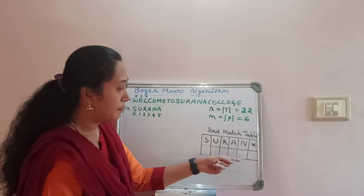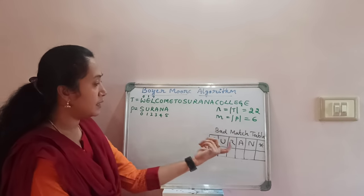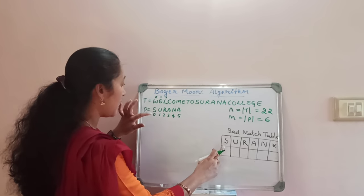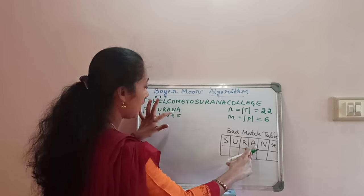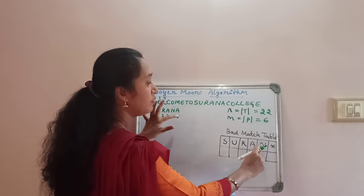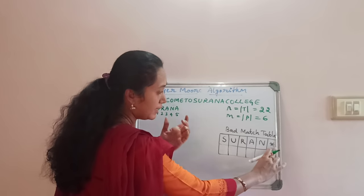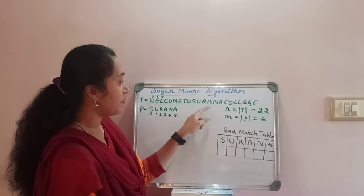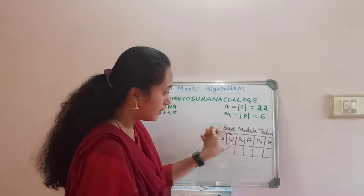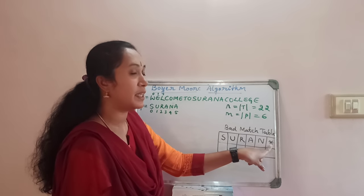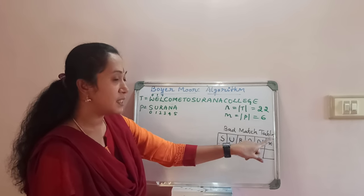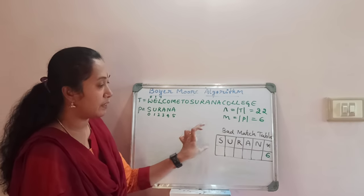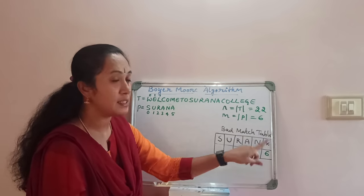I have started with S, U, R, then A, N — A we already have in the table, so we have no need to write it again. The last character star we have. The role of this star symbol is: during the matching procedure, if we find any character other than those in this pattern, we are going to consider that character as star. The value of star is always equal to the length of the pattern, which is 6. This is a very important point to remember — the value of star is always 6.